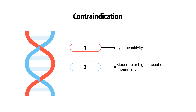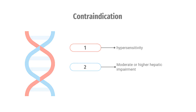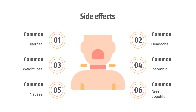Contraindications of Roflomilast 250 mcg and 500 mcg include: allergy to the active ingredient Roflomilast or any excipients in the drug, and moderate or higher hepatic impairment, Child-Pugh grade B or C.